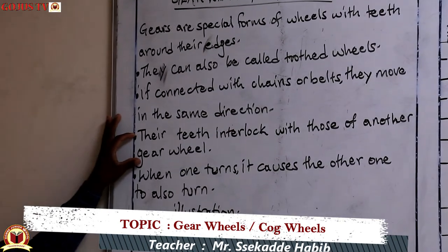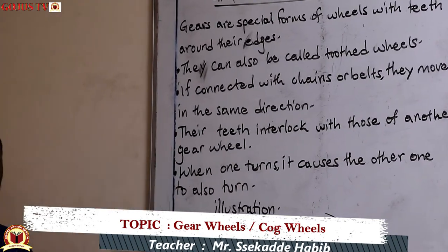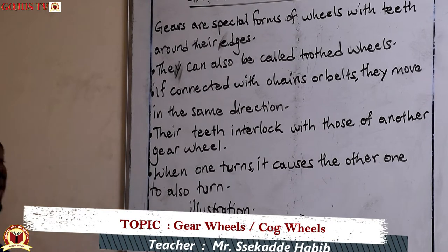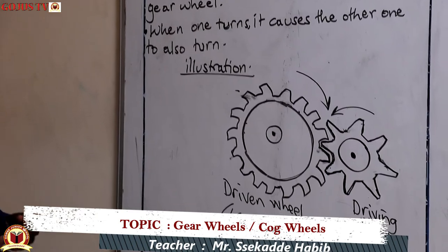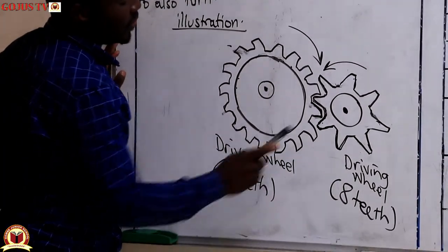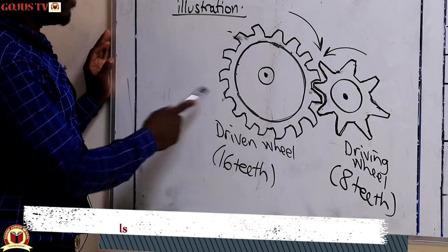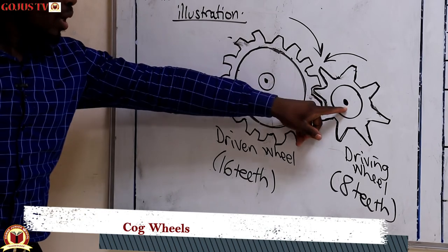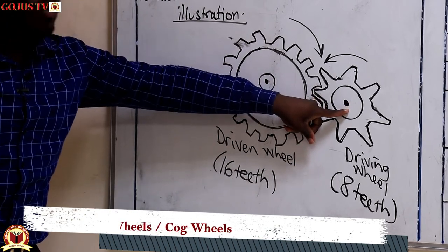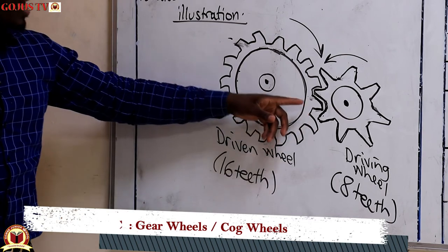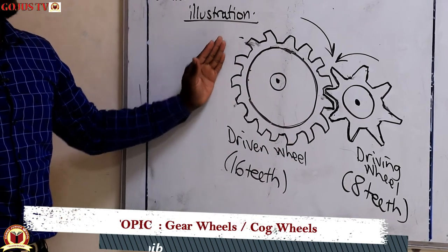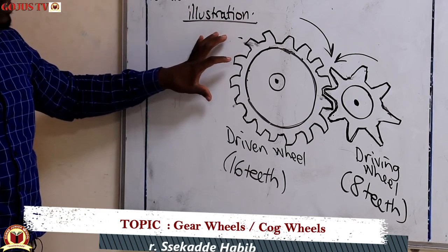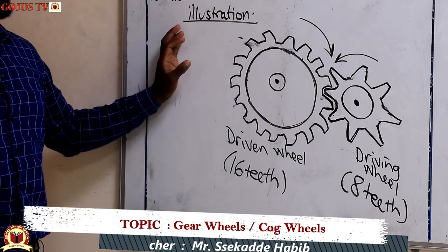If you have one gear wheel and another gear wheel, the teeth interlock, and when one of them turns it causes the other to turn. As you can see in this illustration, we have a driving wheel here with eight teeth, and then we have the driven wheel which has 16 teeth. If the driving wheel moves in this direction, it will also cause the driven wheel to move. If these are connected with chains, we get another machine that we are yet to describe.